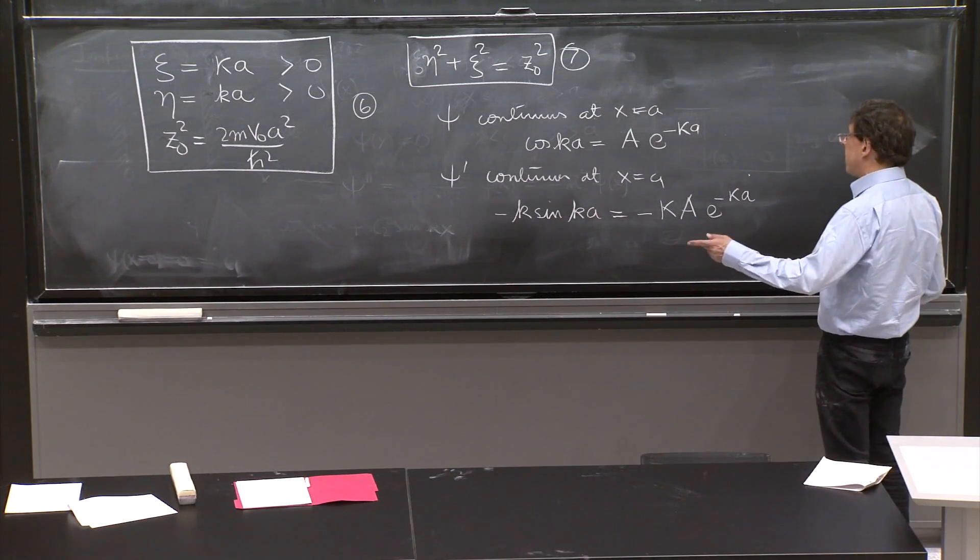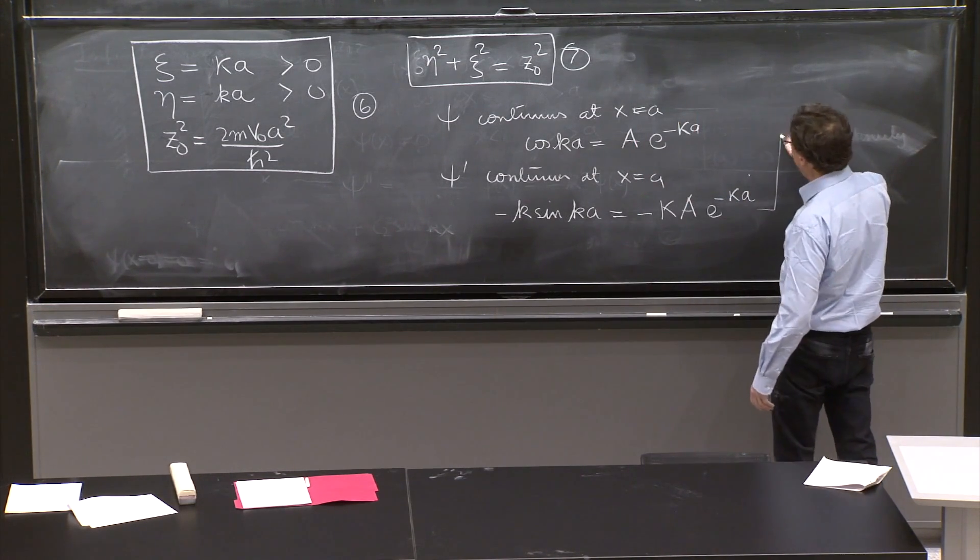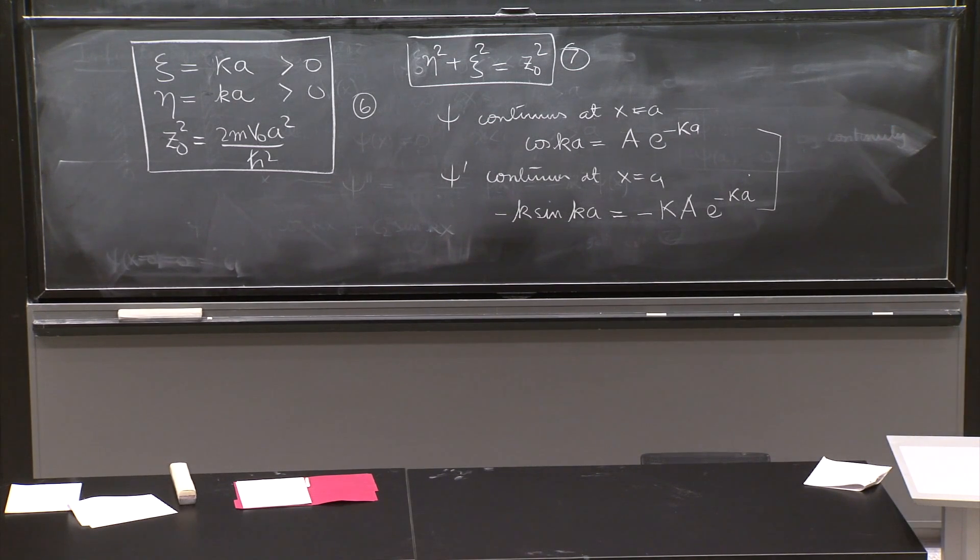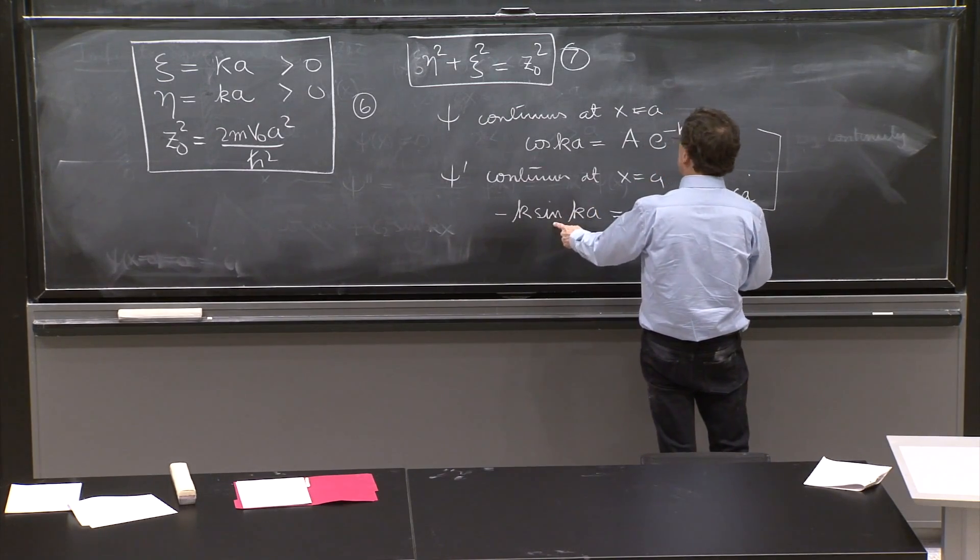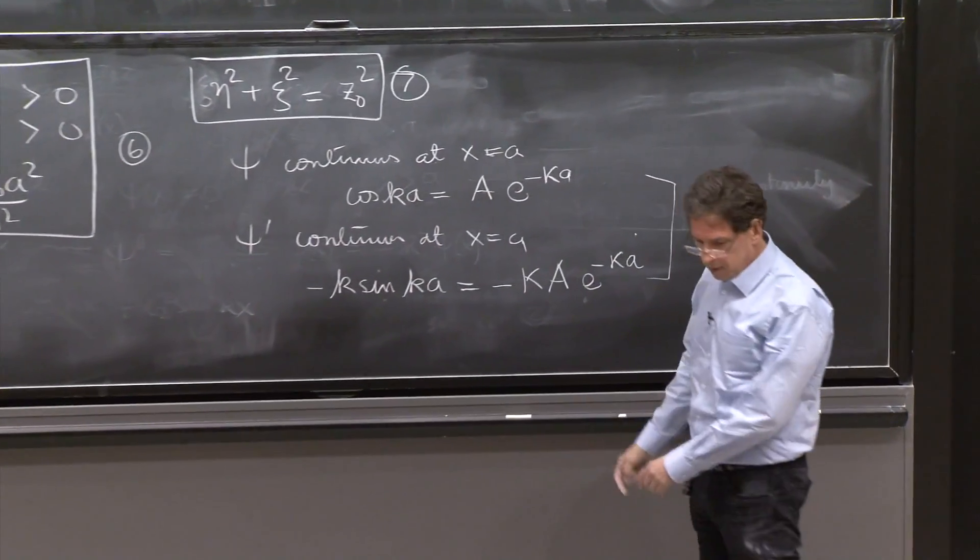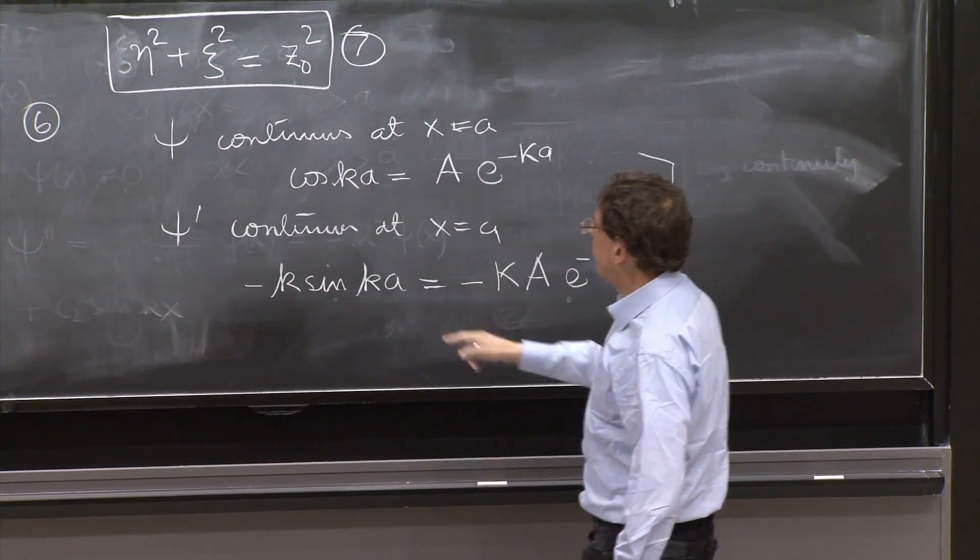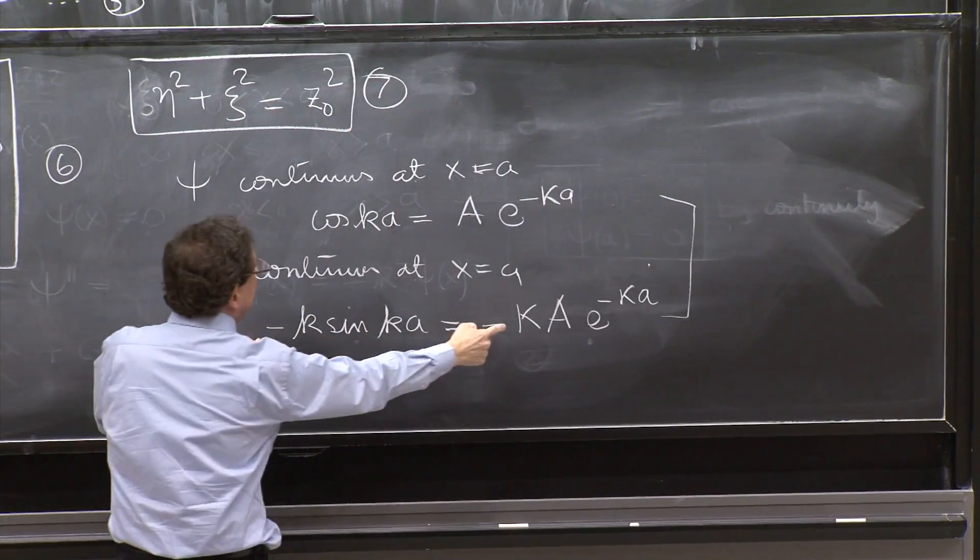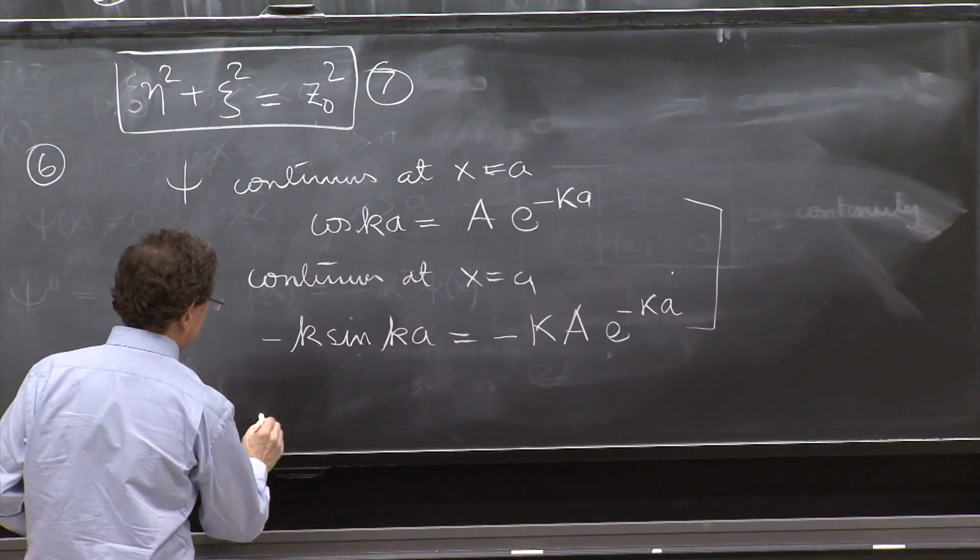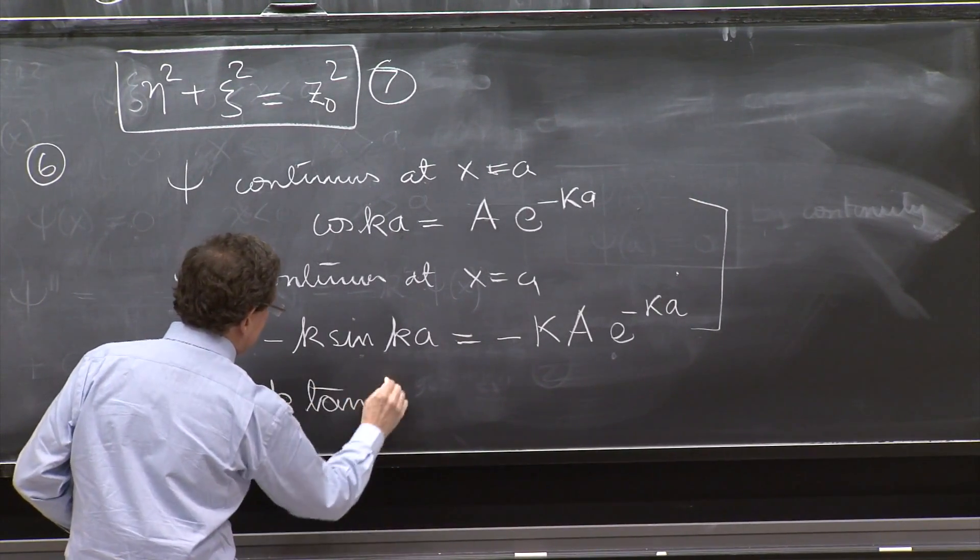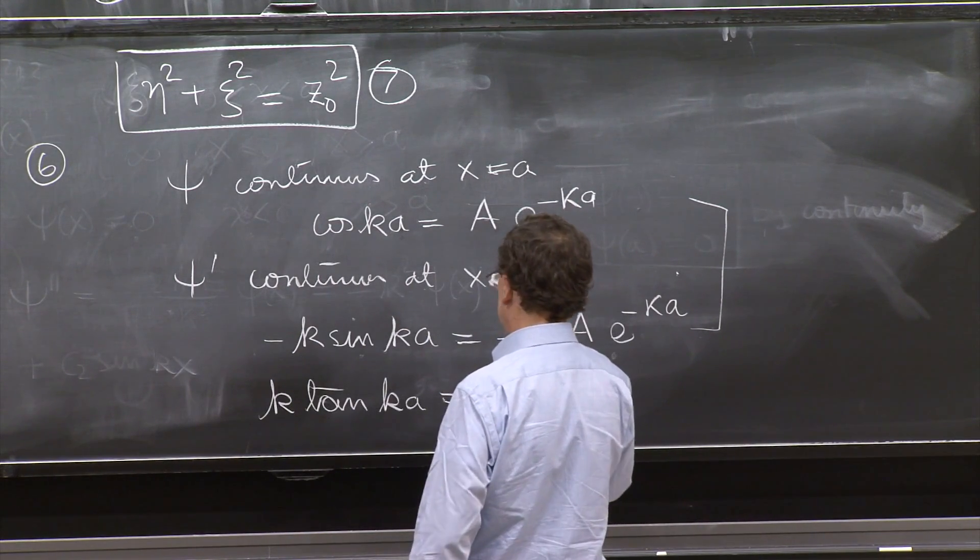Two equations. And how many unknowns? Well, there's a and some information about kappa and k. And the easiest way to eliminate that is to divide them. So you divide the bottom equation by this equation. So what do we get? Divide the bottom by the top. Minus k and a minus. The minuses cancel.